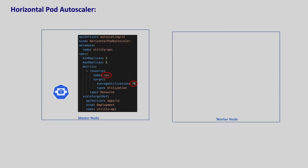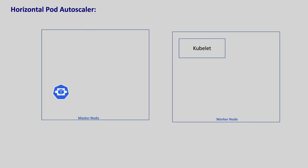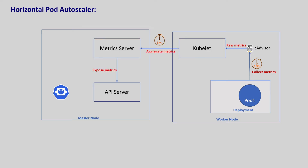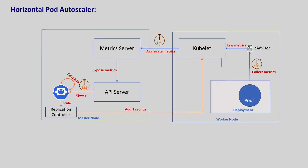Let us see how HorizontalPodAutoscaler works. In Kubernetes architecture, on every worker node, kubelet runs. There is an agent in kubelet called cAdvisor, or container advisor by Google. When we have our pods running on the worker node, cAdvisor can scrape the pod's CPU and memory usage every 10 seconds. Every minute, the metrics server will aggregate those metrics and expose them to the Kubernetes API server. The HorizontalPodAutoscaler controller queries the API server every 15 seconds for these metrics. Once this controller gets the desired pod metrics, it checks these metrics against our definition and decides to scale up or scale down our replicas. The HPA controller just updates the replica count in the target deployment; spinning up a new pod or deleting the existing pod will be taken care of by the replication controller. And cAdvisor starts collecting metrics of the new pod as well.